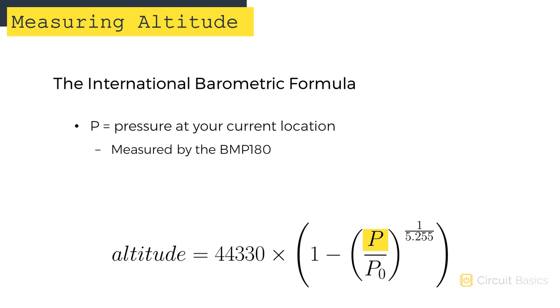We only need to know two things to solve for altitude. P, which is the atmospheric pressure at your current location. This will be measured by the BMP180. And P0, which is the atmospheric pressure at some base level.